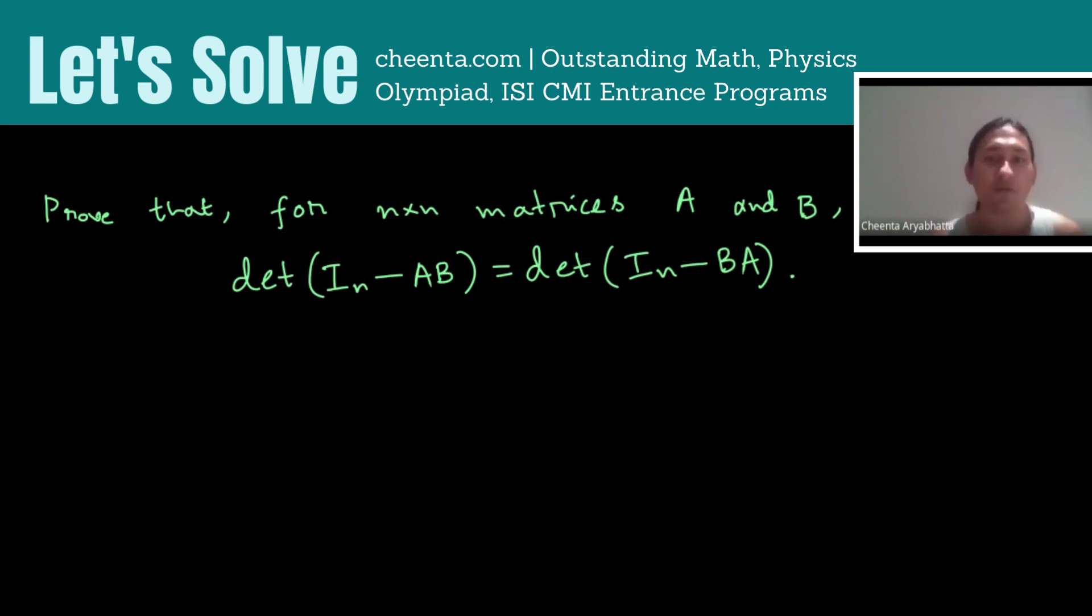Now, if one of the matrices is invertible, then it's easy to prove. Suppose B is invertible.